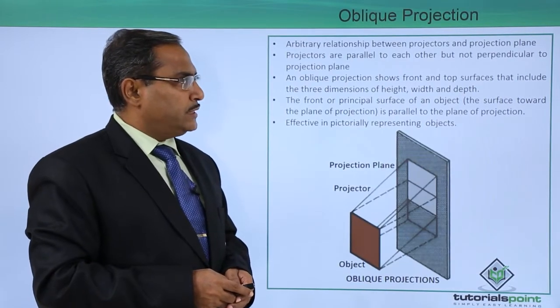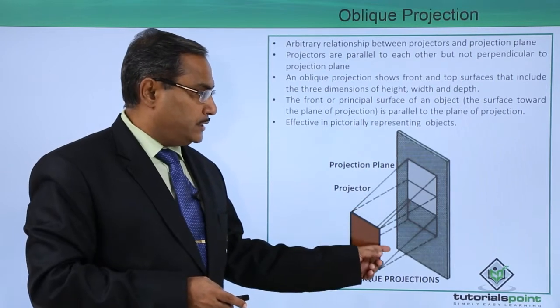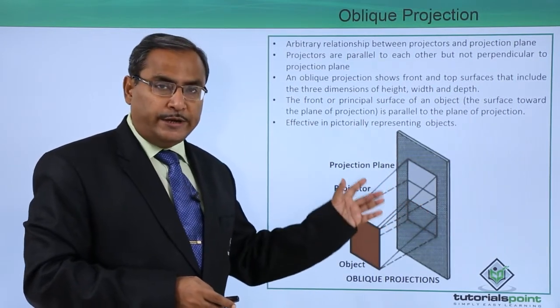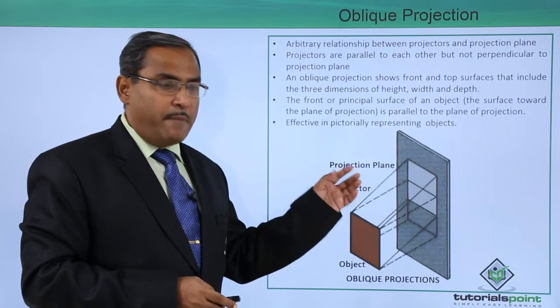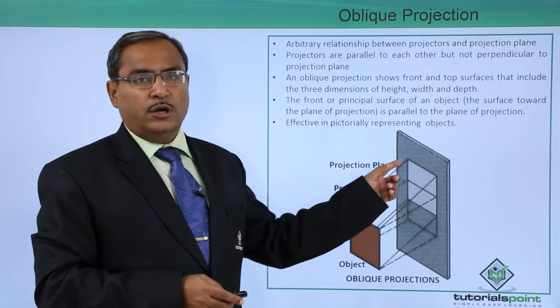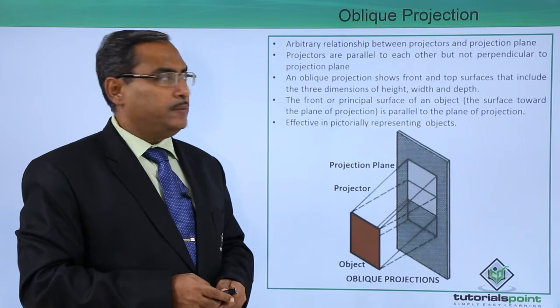Arbitrary relationship between the projectors and projection plane. These are the projectors and this is our projection plane. They have arbitrary relations, that means it is not mandatory that these projectors will be perpendicular on this projection plane. That is why the relationship is arbitrary.